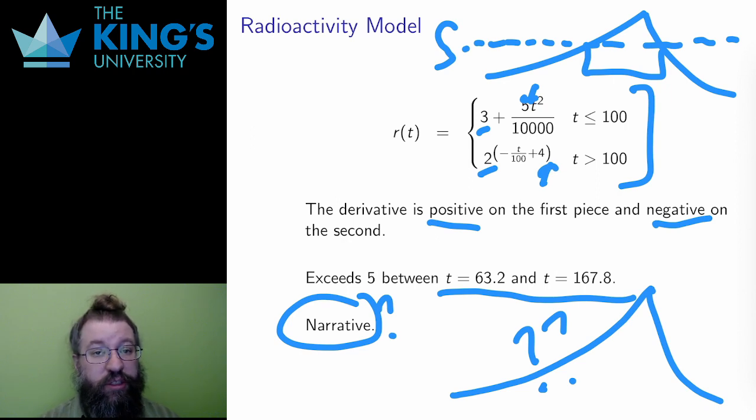Well, then after 100 years, something changes. Maybe the industry stops. Maybe an earthquake closes the vent. Something happens, and then the remaining radioactivity decays over a long period of time, which is exactly what radioactivity does. So all in all, this seems like a reasonable model.